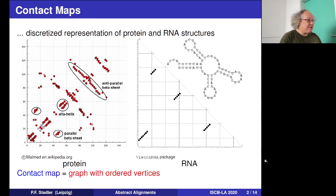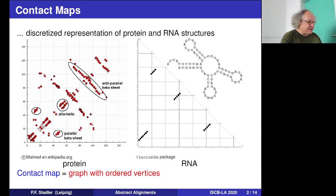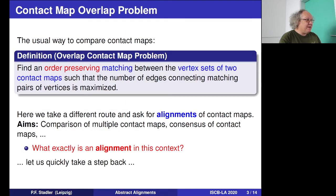Contact maps are a very simple discretized version to represent RNA or protein structures. You have probably all seen these diagrams that nicely expose secondary structure elements of proteins or RNAs. The usual way to compare contact maps is to find an order-preserving matching between two contact maps such that the number of edges connecting matching pairs of vertices is maximized — essentially optimizing the overlap of edges or contacts.